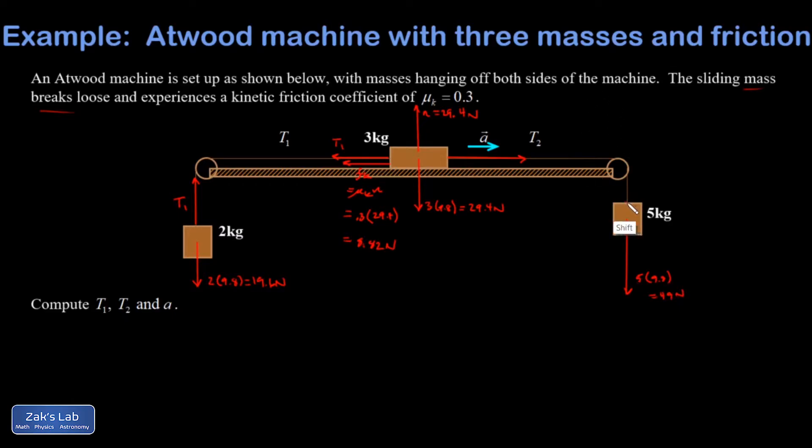And again T2 is pulling up on that mass. And I'm going to draw T2 shorter than 49, or at least I tried to, because I know the 49 Newtons must be greater than the upward tension here. Otherwise the five kilogram mass wouldn't be accelerating. So I'm going to get my accelerations in.